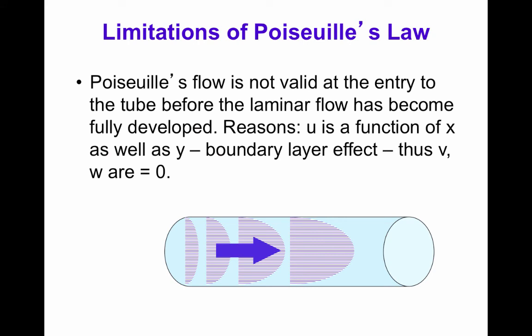There are limitations to Poiseuille's formula. It is not valid at the entry to the tube before the flow has become laminar and steady, because at the beginning the flow takes time to become fully developed. In this entrance condition, u is a function of x as well as y — a consequence of boundary layer effects.